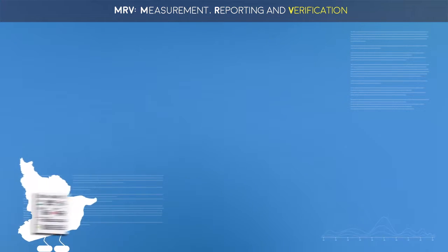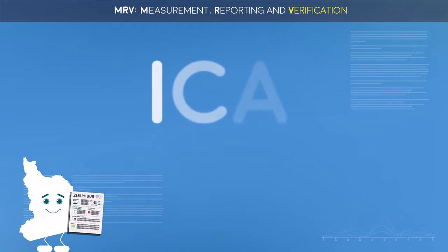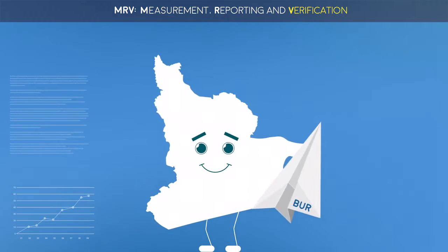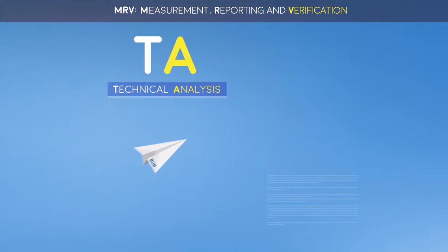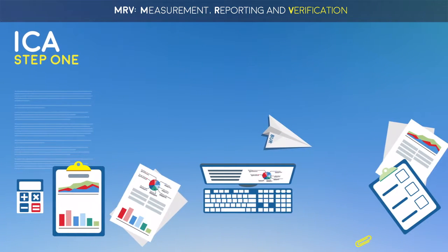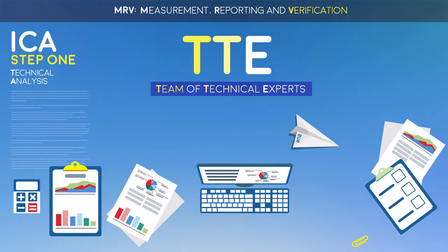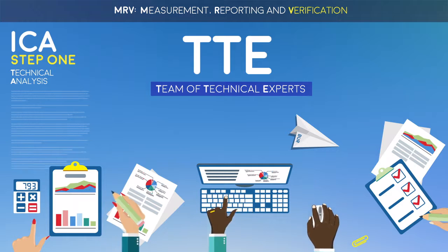ZIBU is now ready for the final phase of MRV. Submitted BURs undergo a transparent, two-step verification process called International Consultation and Analysis, also known as ICA. When ZIBU submits the BUR, it undergoes a technical analysis, which is Step 1 of the ICA. Technical analysis simply means that a team of technical experts analyzes the report and identifies ZIBU's capacity building needs.